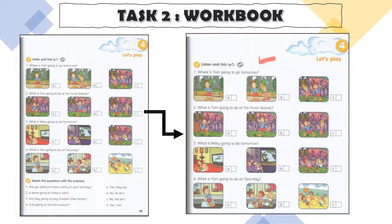'Tom, what are you going to do tomorrow? Are you going to go to the park?' 'No, I'm going to go to the music festival.' 'Are you going to go with your family?' 'Yes, I'm going to go with my sister.' Done, number one. Number two: 'What is Tom going to do at the music festival?' 'I'm very excited — it's going to be a lot of fun.' 'Are you going to dance?' 'No, I don't like dancing. I'm just going to listen to the music.' 'Is your sister going to dance?' 'Oh yes, Molly loves to dance.' Done, number two.